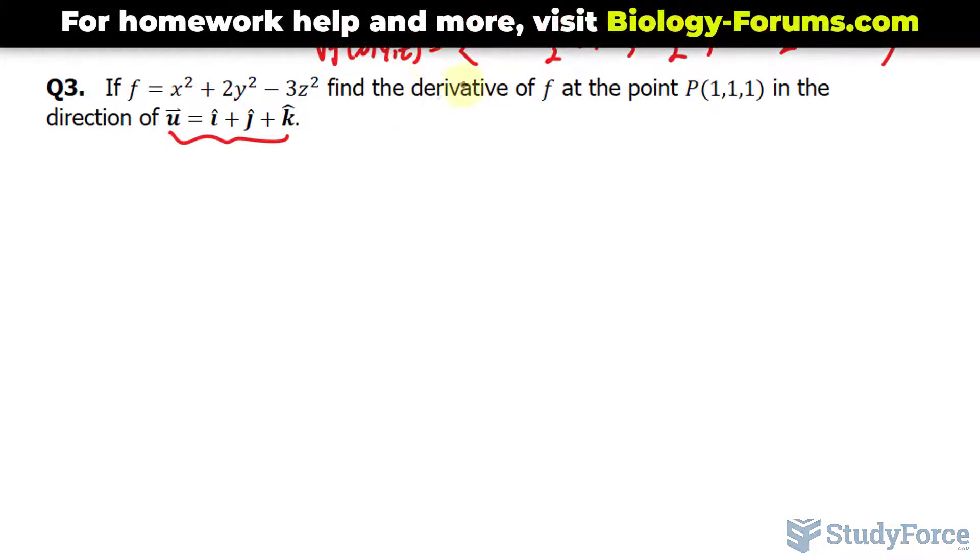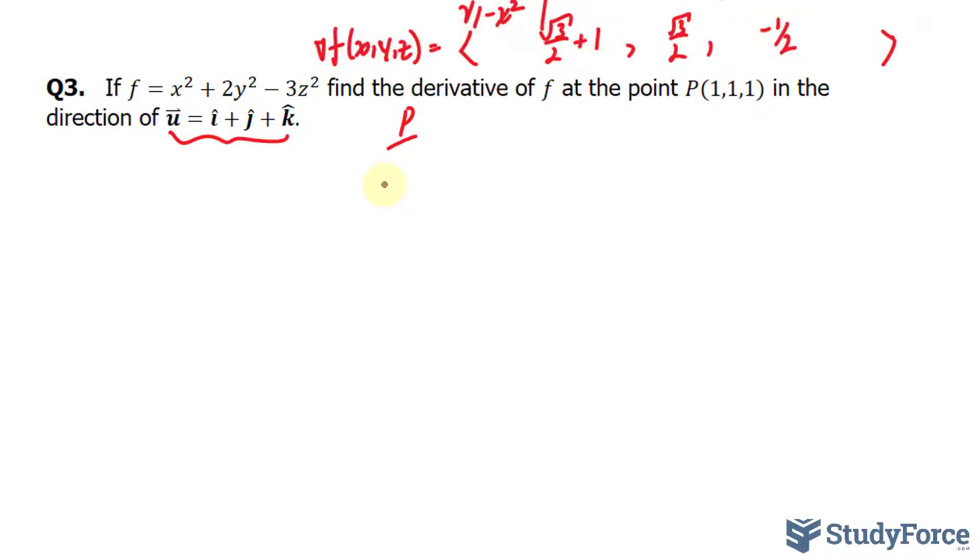They've asked for the derivative, but I think they meant partial derivative. Just like what we did in question number 1, we have to find the unit vector of our vector u.